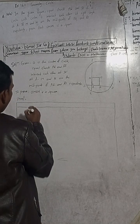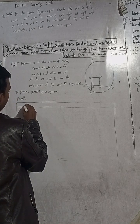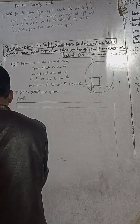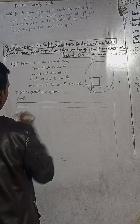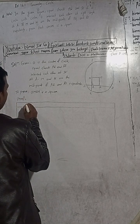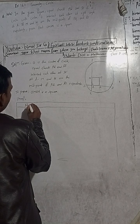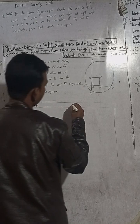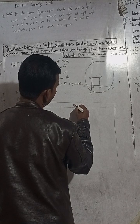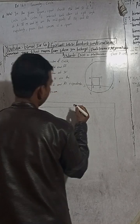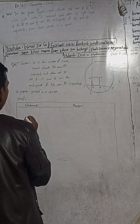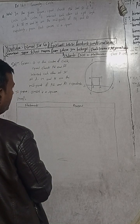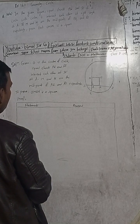We are going to show the statements and reasons. What is the proof that OMAN is a square?